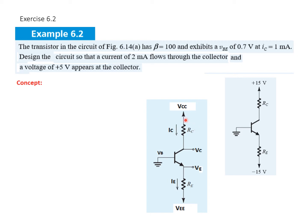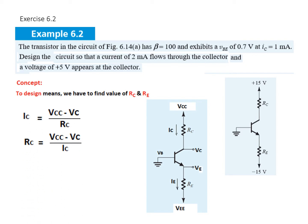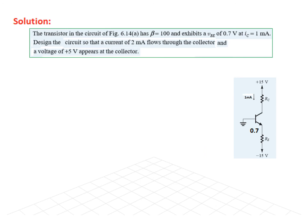Design means we have to find the value of RC and RE to meet the given parameters. From the collector side, IC equals (VCC minus VC) divided by RC, so RC equals (VCC minus VC) divided by IC. Similarly, for the emitter circuit, the current is (VE minus VEE) divided by RE, so RE equals (VE minus VEE) divided by IE, following conventional current.